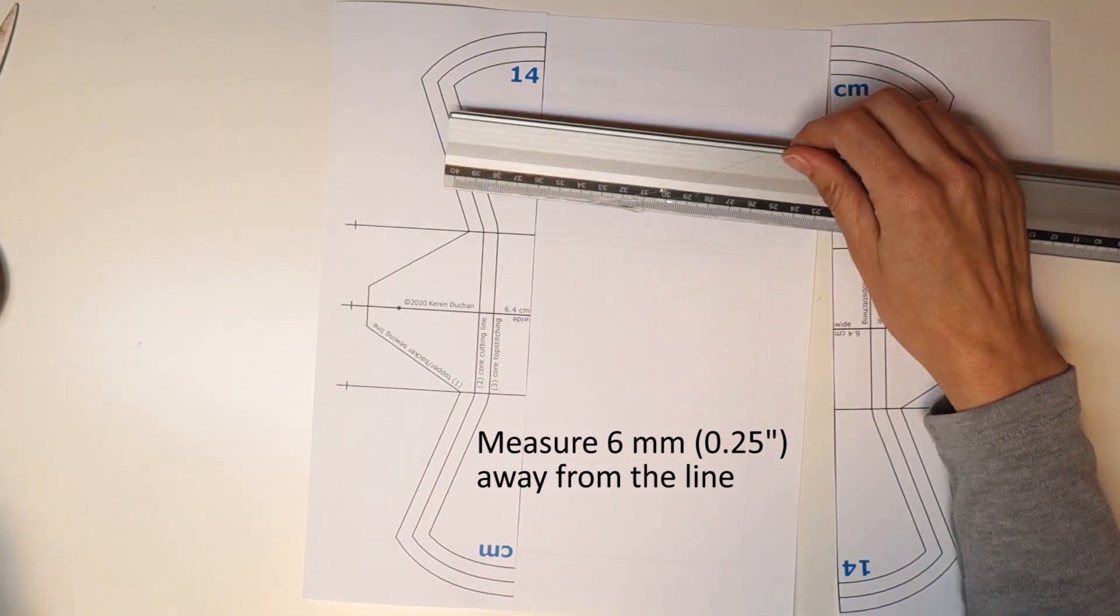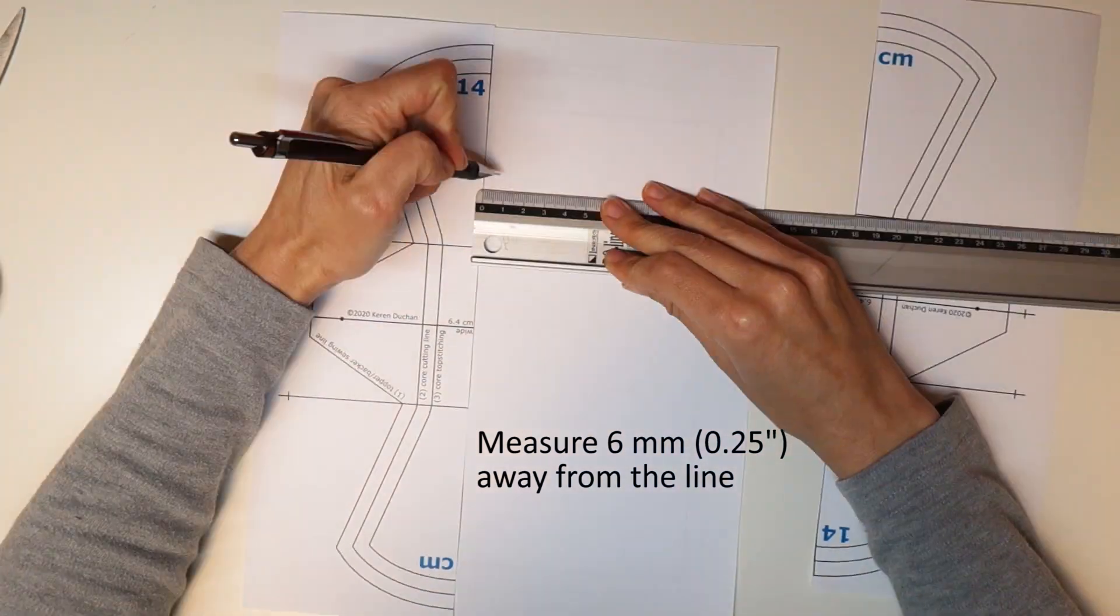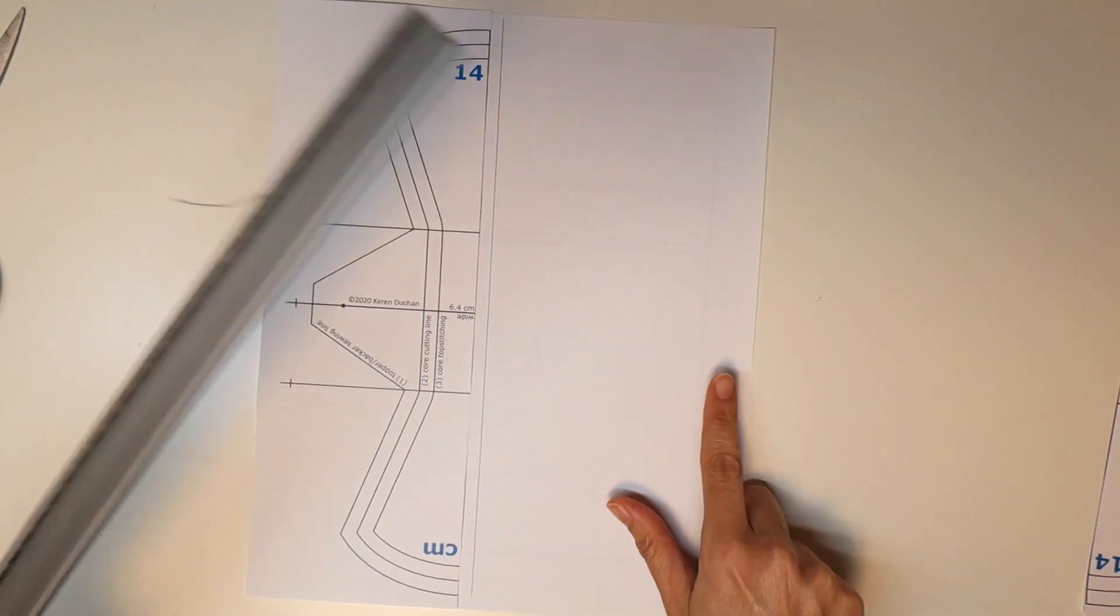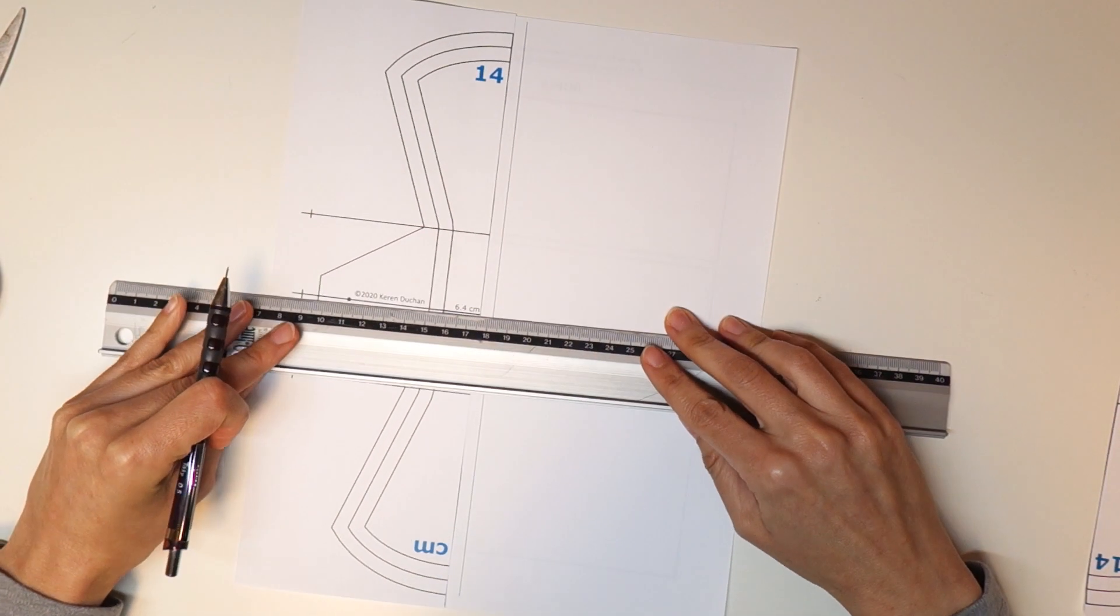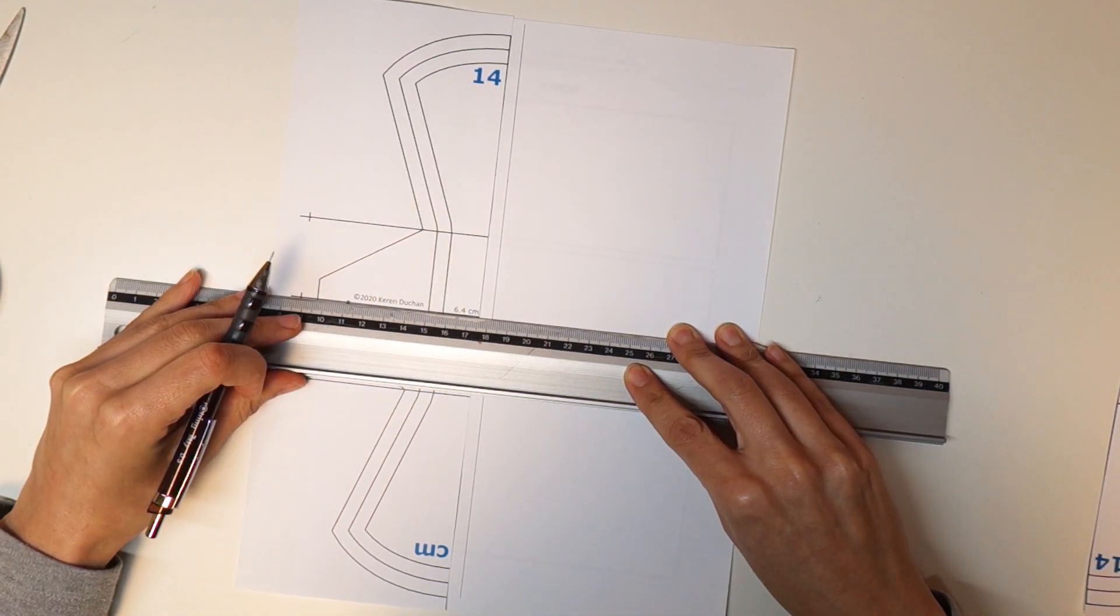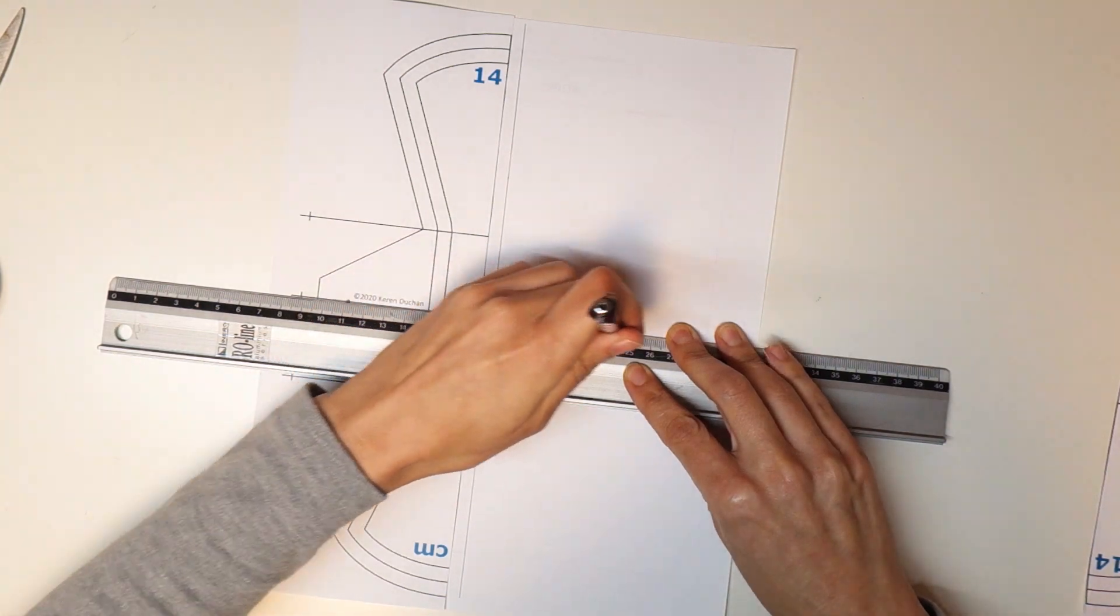And now we're going to measure however much wider we want the pad to be. And I'm also going to use this horizontal line and lengthen it, so that I know that I'm taping the pieces together properly.